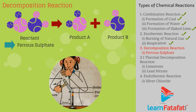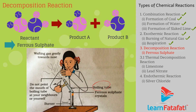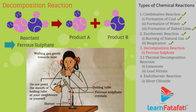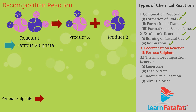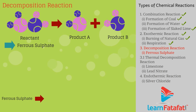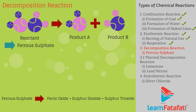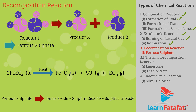Take about 2g of ferrous sulphate crystals in a dry boiling tube. Note down the colour of ferrous sulphate crystals. Heat the boiling tube over the flame of a spirit lamp. Ferrous sulphate crystals lose water on heating and the crystal colour changes — the green colour crystals of ferrous sulphate have changed. It then decomposes to ferric oxide, sulphur dioxide, and sulphur trioxide: 2FeSO₄ → Fe₂O₃ + SO₂ + SO₃ (on heating).